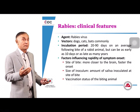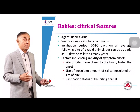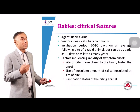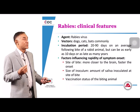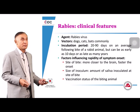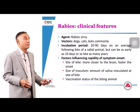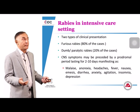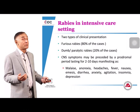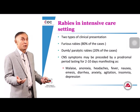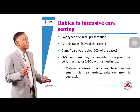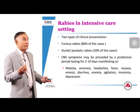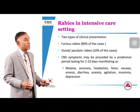In the ICU, rabies presents in two ways: furious rabies, the majority of cases, or dumb (paralytic) rabies, which is often missed and confused with Guillain-Barré syndrome or other encephalitides with brainstem involvement. CNS symptoms may be preceded by a prodromal period with non-specific agitation or paresthesia at the bite site. Classic features of furious rabies include hydrophobia, hyperactivity, and increased autonomic activity. Any patient with unexplained encephalitis, especially with brainstem involvement, should prompt consideration of rabies.